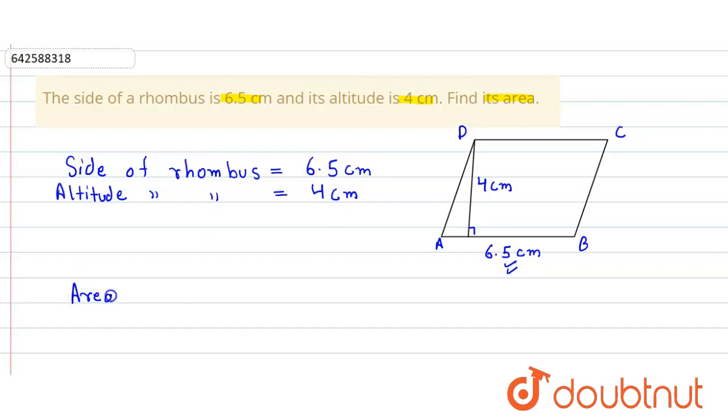Now we use the formula for the area that will be equal to base into altitude. So here it is base into altitude because here this rhombus is also a parallelogram. So the formula for the area of this rhombus will be equal to base into altitude.